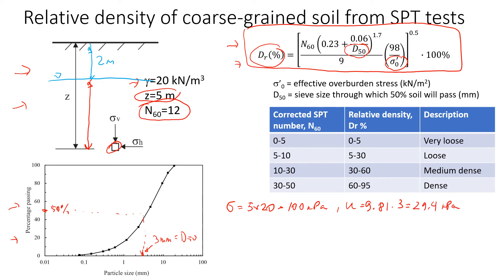And the effective stress is the difference between total stress and water pressure. So 100 minus 29.4 will give us 70.6 kPa.